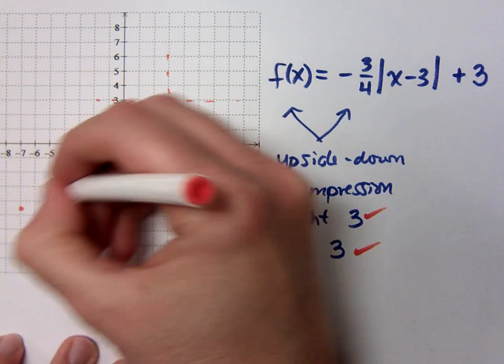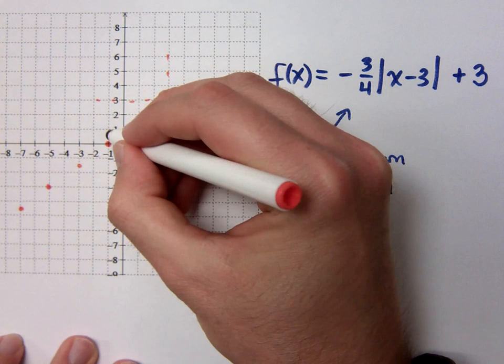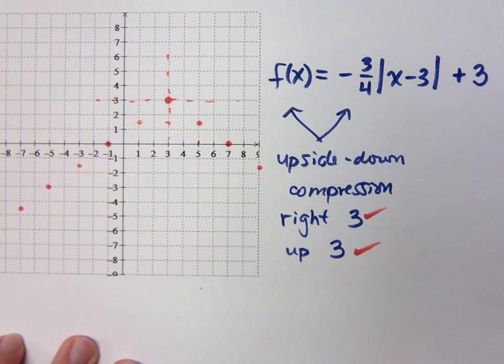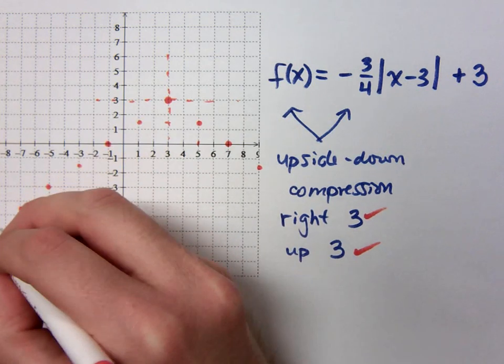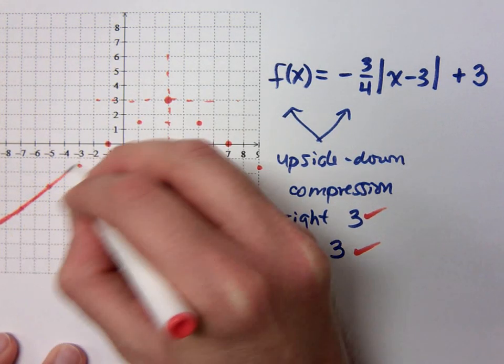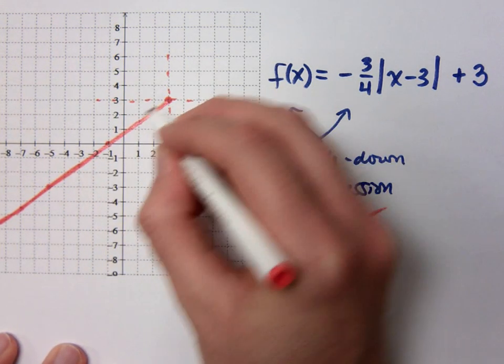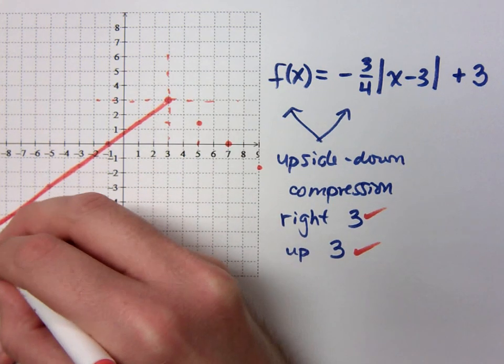1 and a half, 2. 1 and a half, 2. 1 and a half, 2. The more points you have, the more accurate you can be.